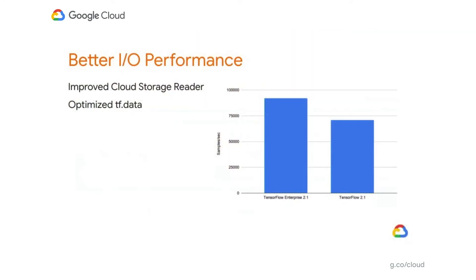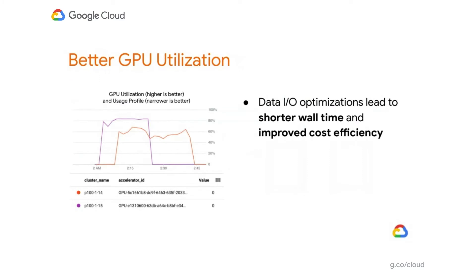With these optimizations included, you can get faster throughput in your model training with TensorFlow Enterprise. On a recommendations dataset, we see about a 30% higher throughput with TensorFlow Enterprise optimizations. This gain in data throughput improves the utilization of accelerators such as GPUs, because you are no longer bottlenecked by I/O. It results in shorter wall time of training for the same accuracy. The purple graph shows the GPU utilization profile with TensorFlow Enterprise 1.15 — it is narrower in time, indicating shorter wall time, and attains a higher peak utilization compared to the orange graph with TensorFlow 1.14, which does not have these optimizations.